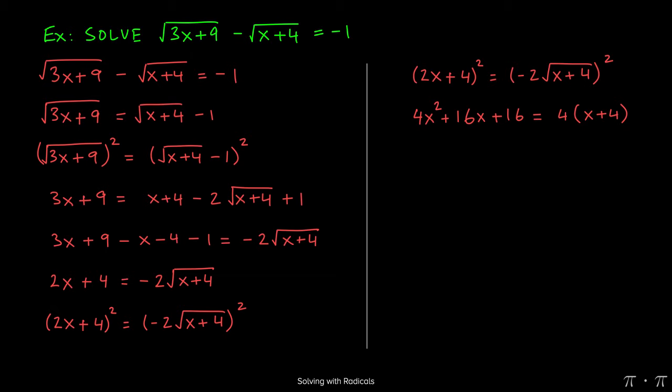The right-hand side when squared: negative 2 times negative 2 will give a 4, and when we square the square root of x plus 4, those two operations cancel each other out, leaving behind just x plus 4. We can distribute the 4 on the right-hand side to get 4x plus 16.